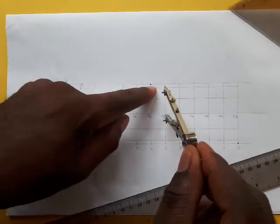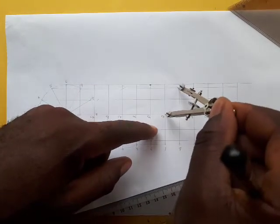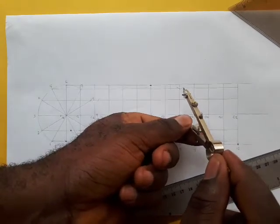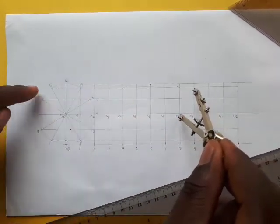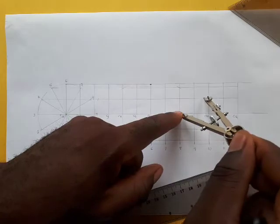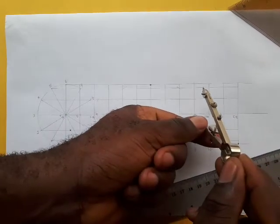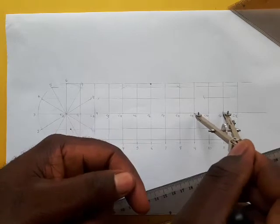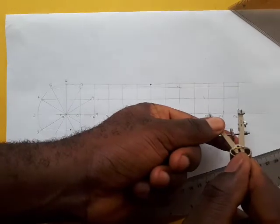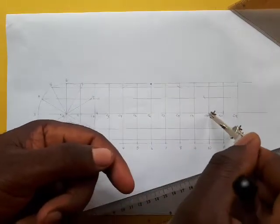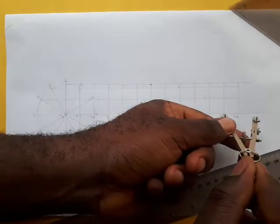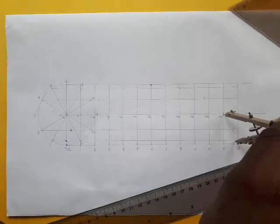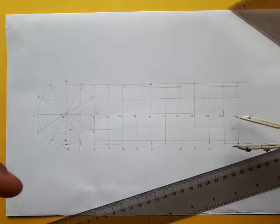Then you move to C7. This is line 7. You know 5 and 7 are on the same line, so you cut 7. You move to C8. This is 4-8 line, so you cut line 8. C9, you cut line 9. C10, you cut line 10. C11, you cut line 11. 12 has already been dotted.